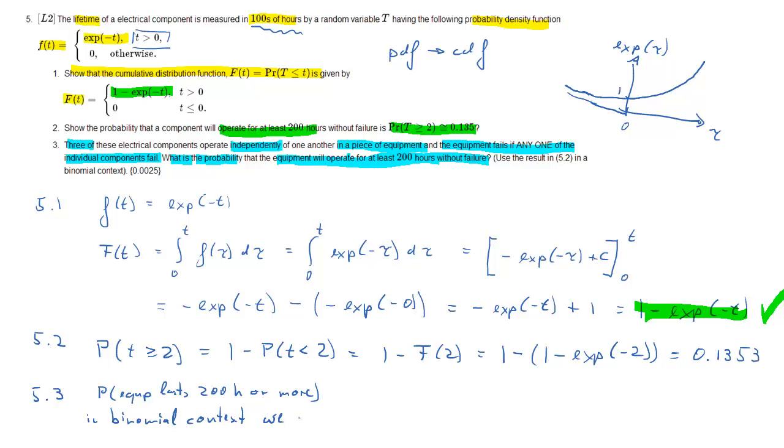So let's write down the problem. Probability that the equipment lasts at least 200 hours. Now in a binomial context, and that's how we should solve this problem as we are given a hint in that direction, what we need is a probability of success.